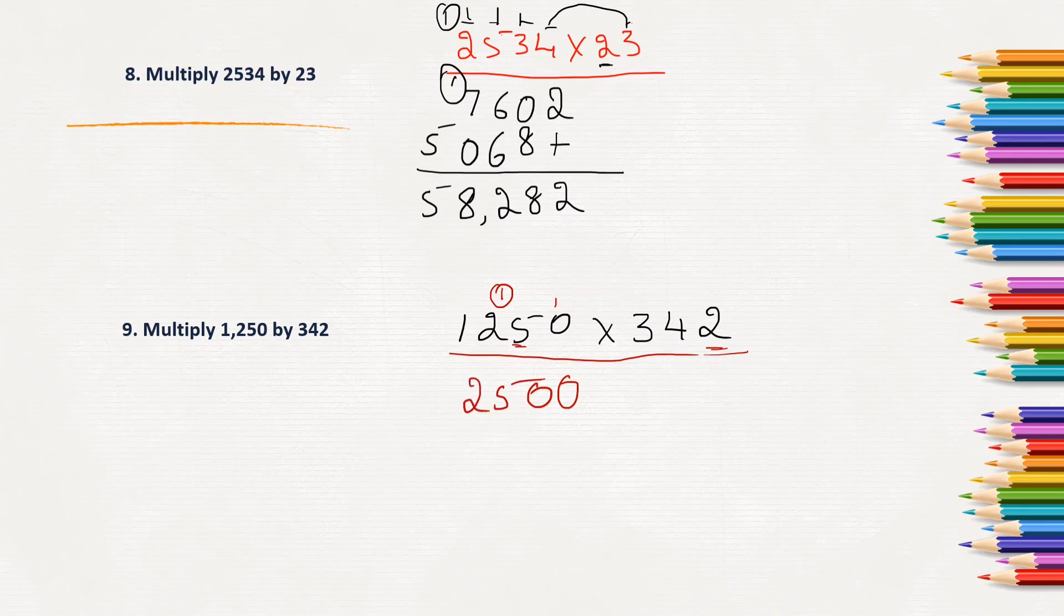Next, 4 times 0 is again 0, but as 4 is in tens place, we have to leave the ones place empty. And 4 times 0 is 0, we will write 0. 4 times 5 is 20, so 0 here and 2 has to be carry. 4 times 2 is 8, 8 plus 2 is 10, 0 here and 1 carry. 4 times 1 is 4 plus 1, 5.